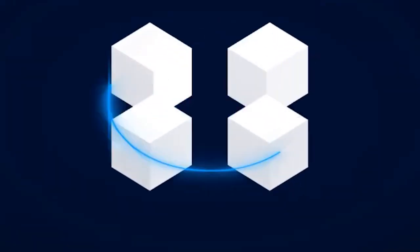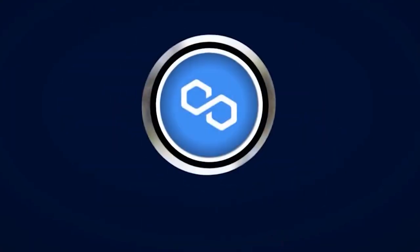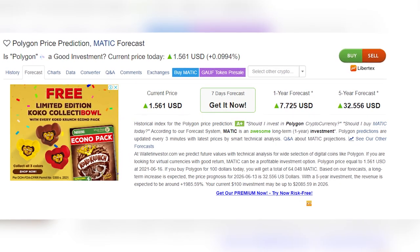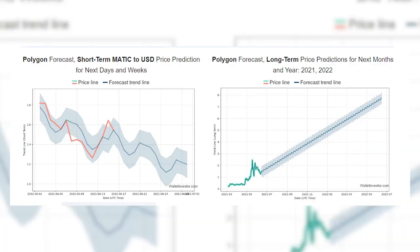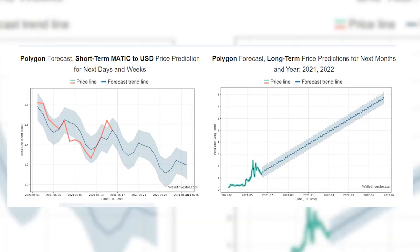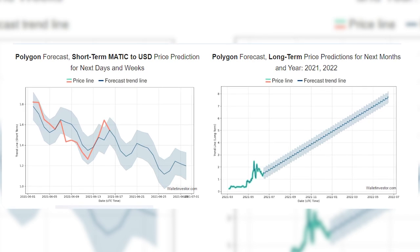According to Digital Coin Price, Matic should reach $3.13 by 2021 end. Meanwhile, Wallet Investor has a bullish target for Matic. According to its forecast system, Matic is an awesome long-term or one-year investment, and its price could reach $5.12 in one year.